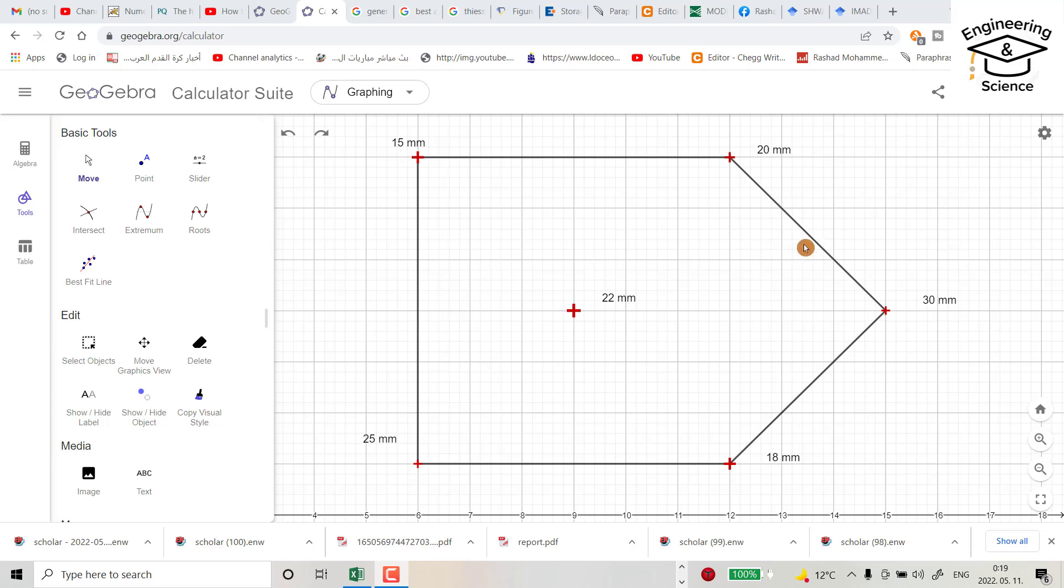Hello everyone, today I want to show you how we can use Thiessen polygon method to calculate average precipitation over an area. We have six stations: station 1 with 15 millimeter precipitation, station 2 with 20 millimeters, station 3 with 30 millimeters, and so on.